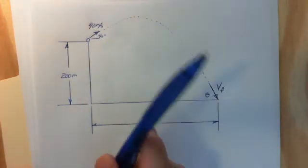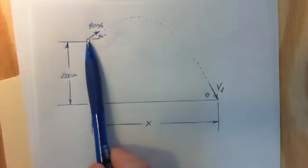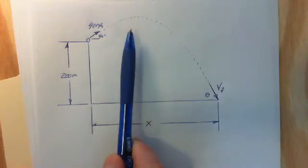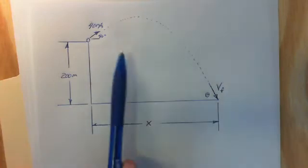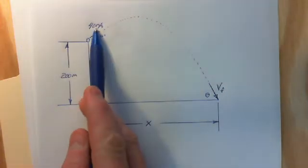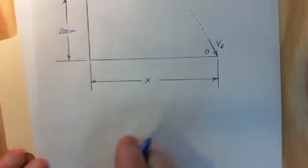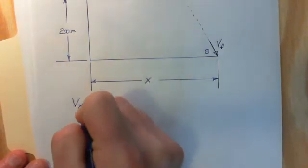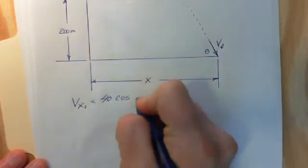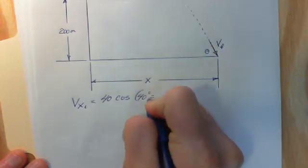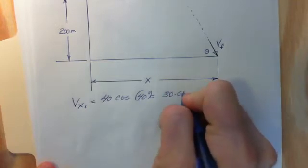A couple things just to clarify. When this object travels through the parabola, the horizontal velocity is going to be the same — it's going to be the same at the vertex and the same at impact. So we're going to break this 40 meters per second into x and y components. The horizontal velocity initial is going to equal 40 meters per second multiplied by the cosine of 40 degrees. That's going to give me a horizontal component of about 30.64 meters per second.